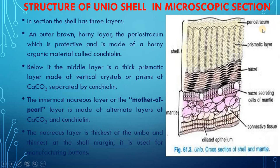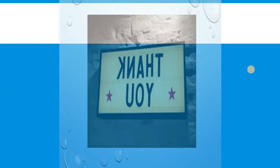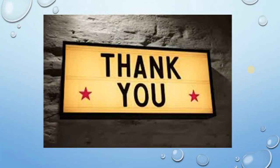In formation of the shell, the periostracum is laid down by the outer lobe of the mantle, whereas the prismatic and nacreous layers are secreted by the entire outer surface of the mantle, though the nacreous layer is also secreted by the thickened lower edge of the mantle. That is all for today's lecture. In the upcoming lectures, we will discuss more about Unio. Thanks a lot.